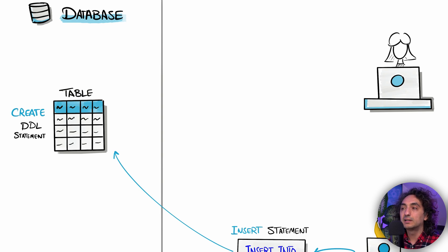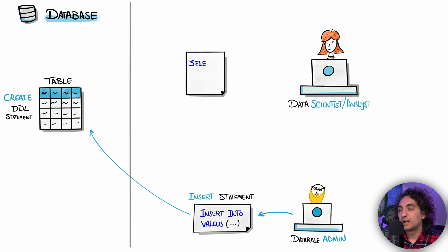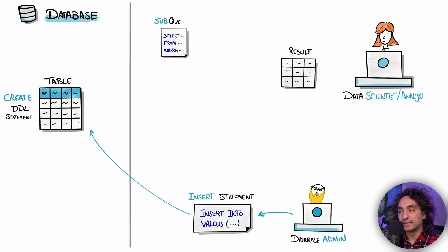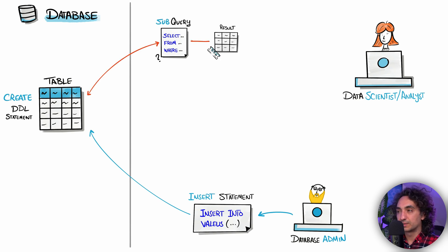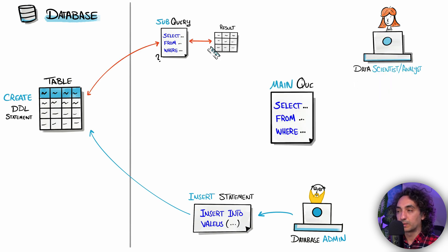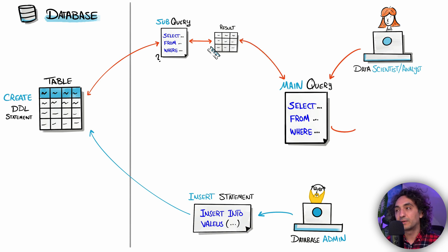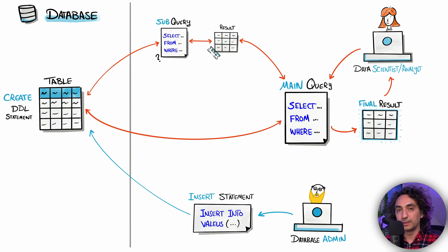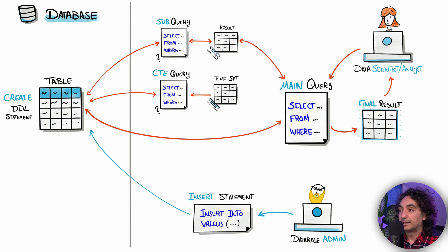Once the table exists, access is given to a data scientist or analyst to start writing SQL queries. If the logic is complex and needs two steps, she uses a subquery — the first step prepares the data and the main query retrieves from the intermediate results. Where SQL logic keeps repeating scripts, instead of writing another subquery she puts the logic in a CTE and then uses the CTE result in multiple places within the same query.